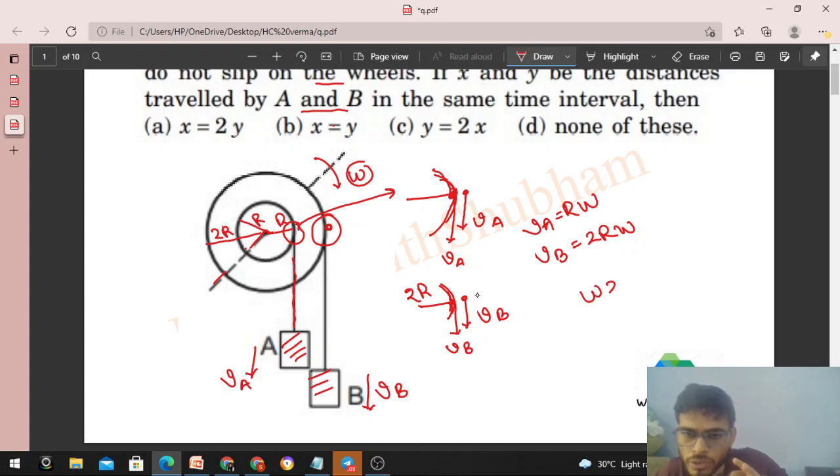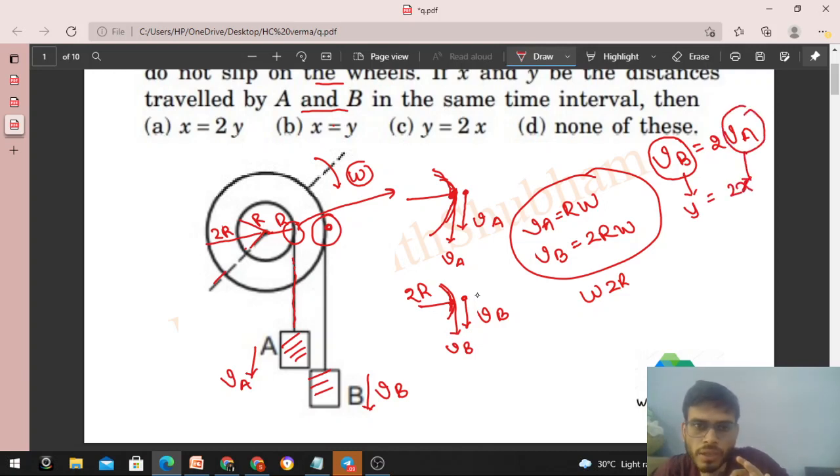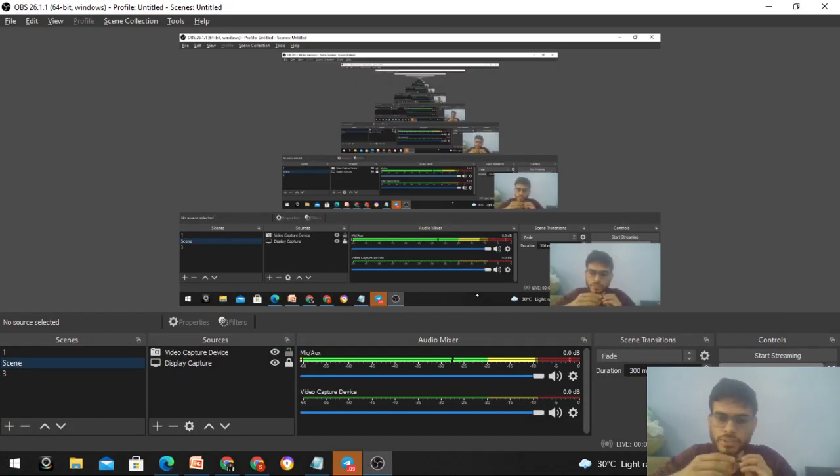So we can say from here that vb will be twice of va, right? It means if we talk about the same time interval, the distance B travels will be twice the distance traveled by A. So y equals 2x, which is option C. I think you understood. Let me know if you still have any confusion—we can discuss further. Keep working hard, best of luck, bye!